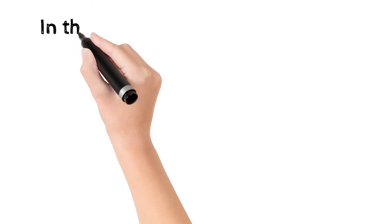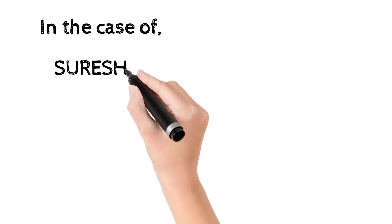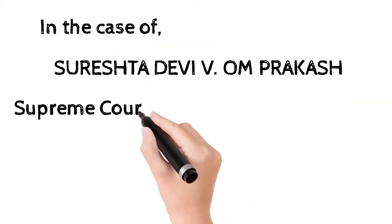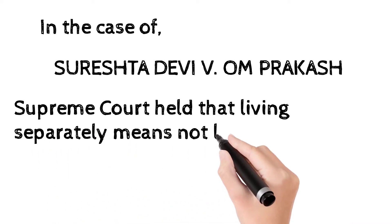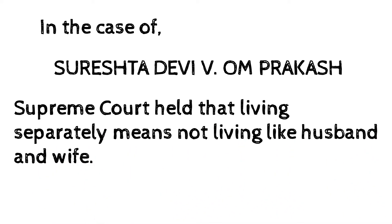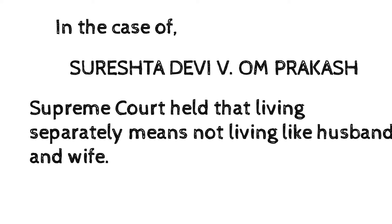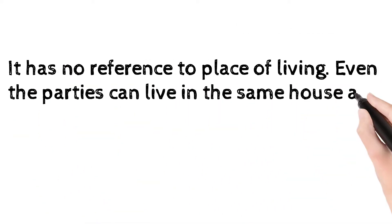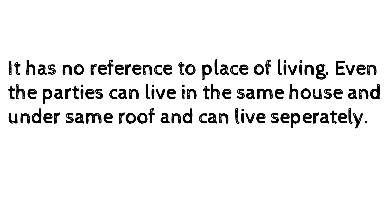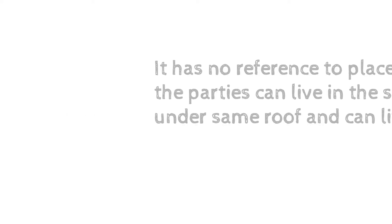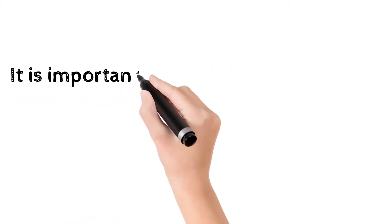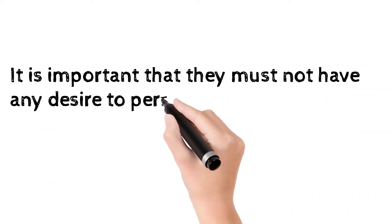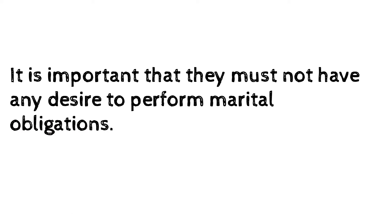In the case of Sureshtha Devi vs Om Prakash, the Supreme Court said that living separately means they must not be living as husband and wife. Even if they are residing under the same roof but not living as husband and wife, they can still be considered as living separately. So if they are not fulfilling marital obligations, they can opt for divorce by mutual consent.